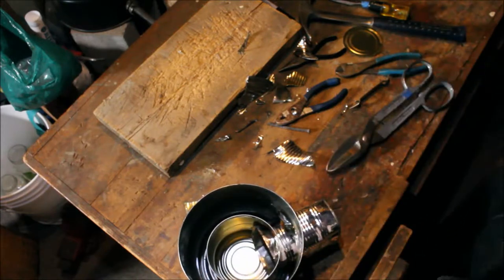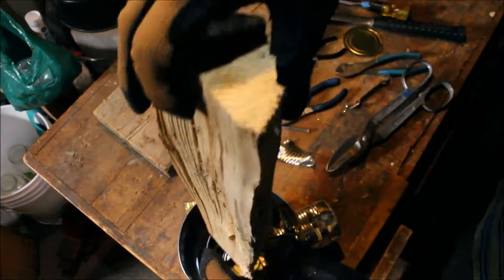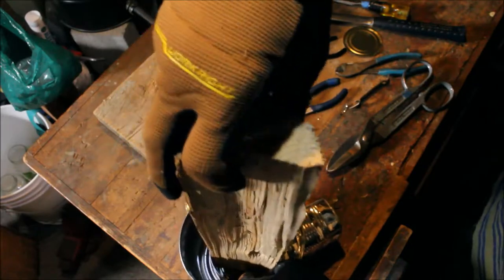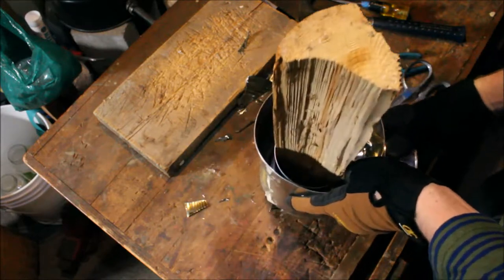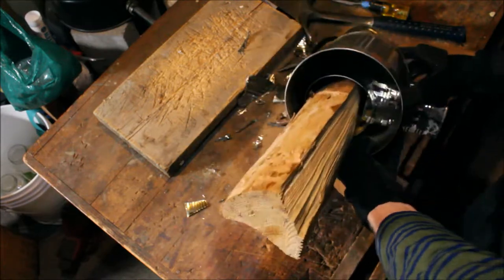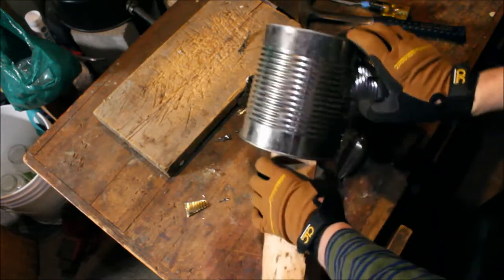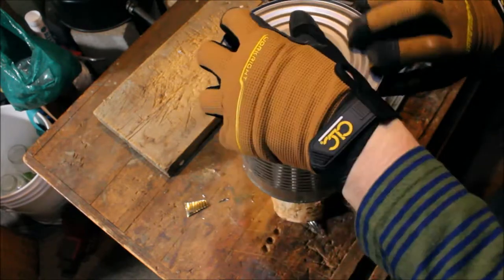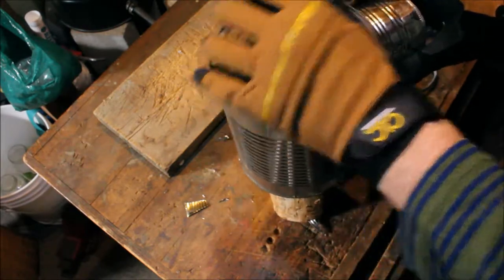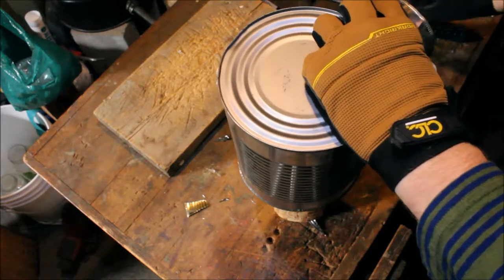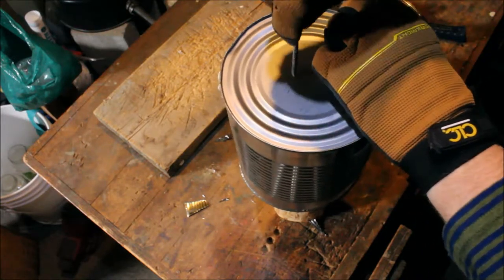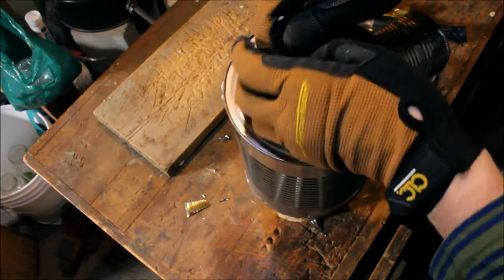So the next step is to line everything up, fit this piece of wood in here, and flip it upside down so you can punch some holes in it, so you can wire the cans together.